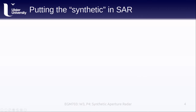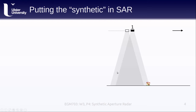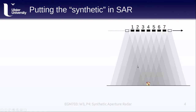Let's have another look at how we build our radar image in the azimuth direction. At this location, our signal doesn't return a signal from the house — the house isn't within the beam. At this location, though, it is. This is the first point where we see a return from the house, and we get another return here, and here, and so on, until the house is no longer within the beam.